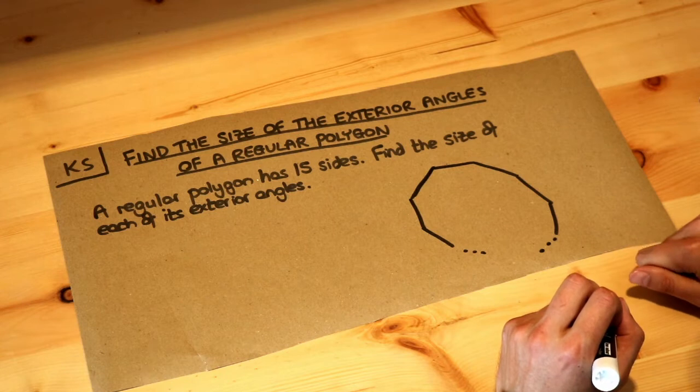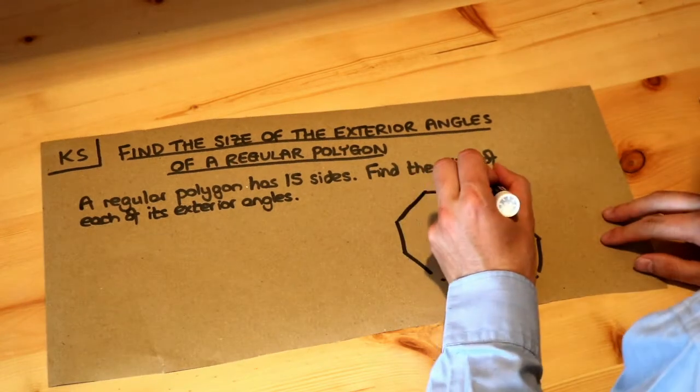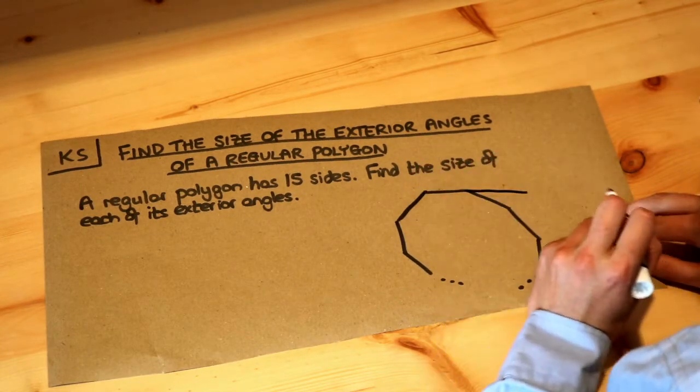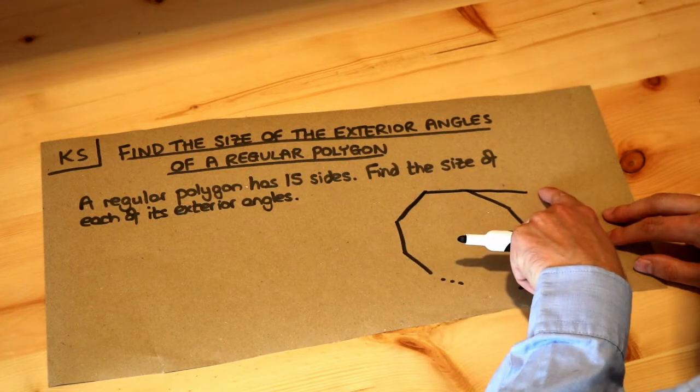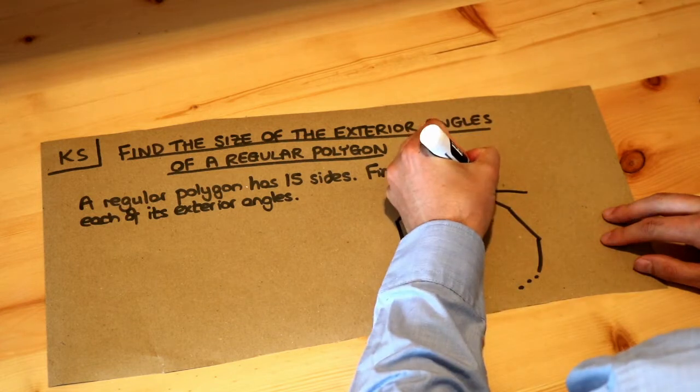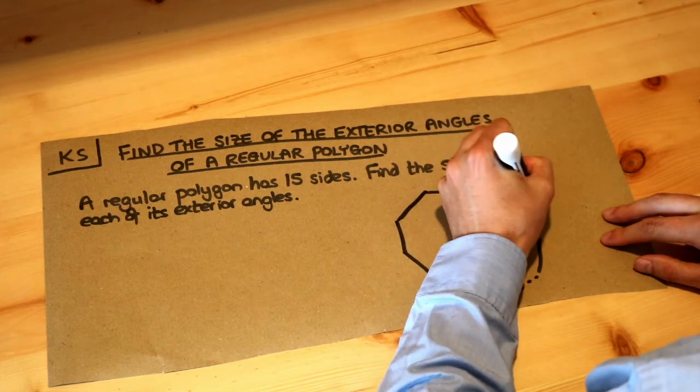Now what's meant by an exterior angle of a polygon? Well it means that if we were to extend out one of the sides, so we take one side and we kind of continue the line so it extends outside of the polygon, then the exterior angle is this angle here.